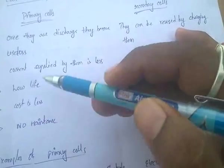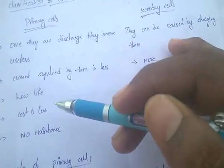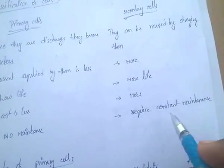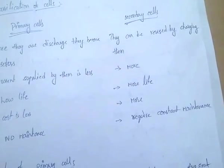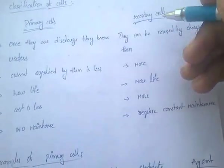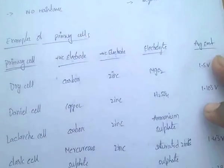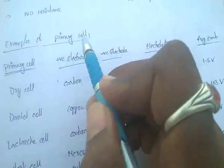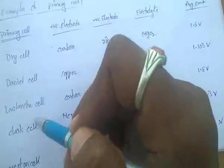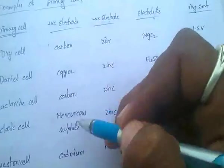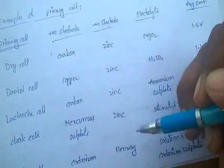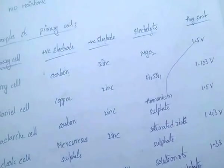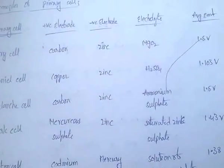Primary cells require no maintenance because they are use-and-throw cells and cannot be charged. Secondary cells can be charged and therefore require constant maintenance. Now, very important examples of primary cells — for each cell type, we look at the positive electrode (anode), negative electrode (cathode), electrolyte used, and average EMF.